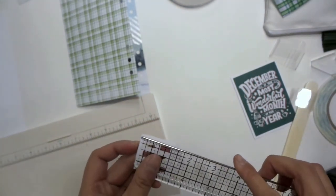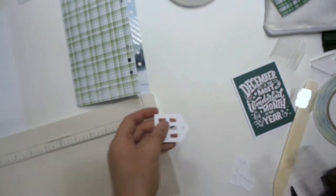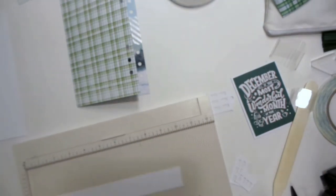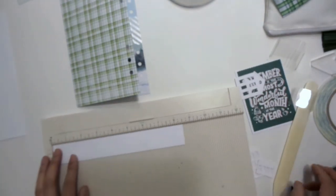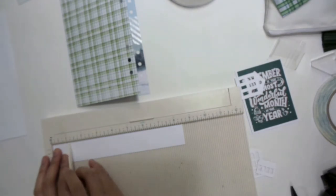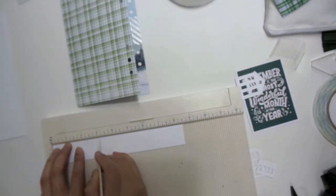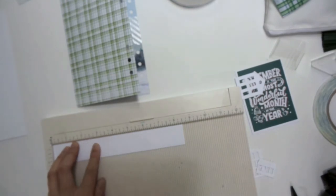Actually let's make it one and three eighths. So I'm going to take my piece and score it at one and three eighths of an inch. Then I'm going to score it at a quarter inch from there, and then one and three eighths of an inch from there. So one, two, three. And then another quarter inch from there.